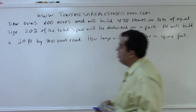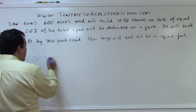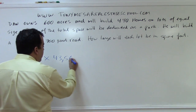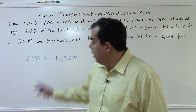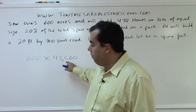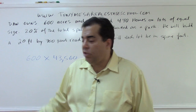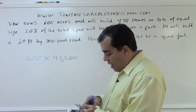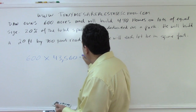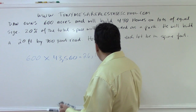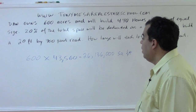First, we have 640 acres total, multiplied by 43,560 square feet per acre. This is a number you need to know for the state exam — each acre equals 43,560 square feet. So 640 acres times 43,560 square feet per acre gives us 26,136,000 square feet total.